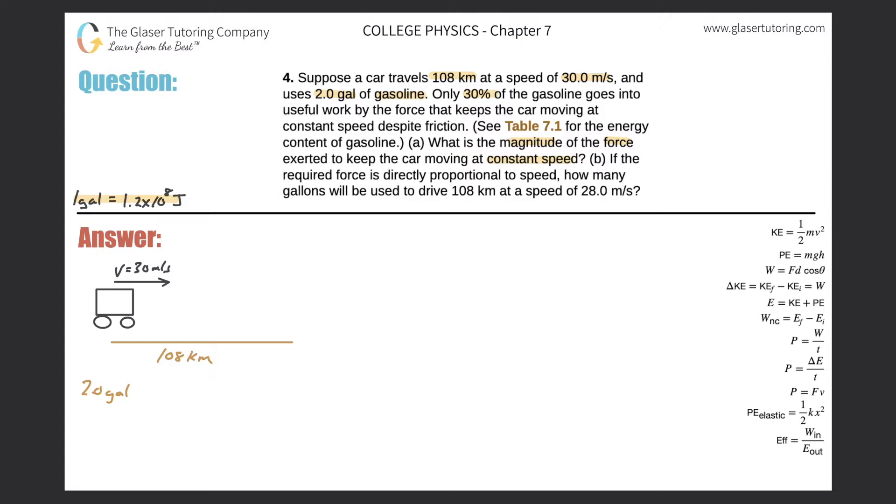So first thing is first. So it wants to know the magnitude of the force exerted to keep the car moving at a constant speed. So it might seem a little tricky on how to relate these quantities together, but let's consider this formula over here on the right hand side. Work is equal to the force applied multiplied by the distance that object is moving and multiplied by then the